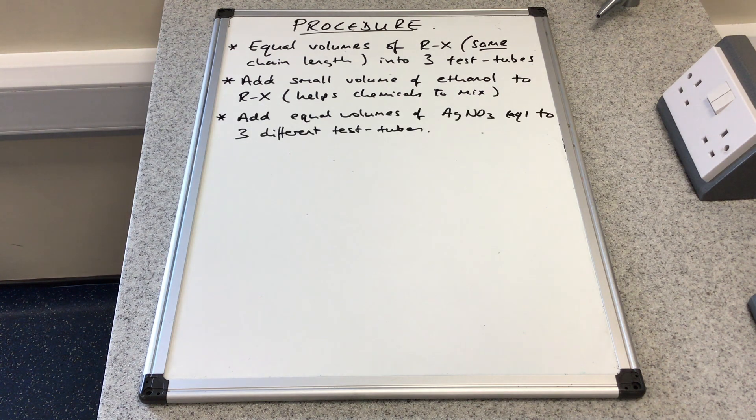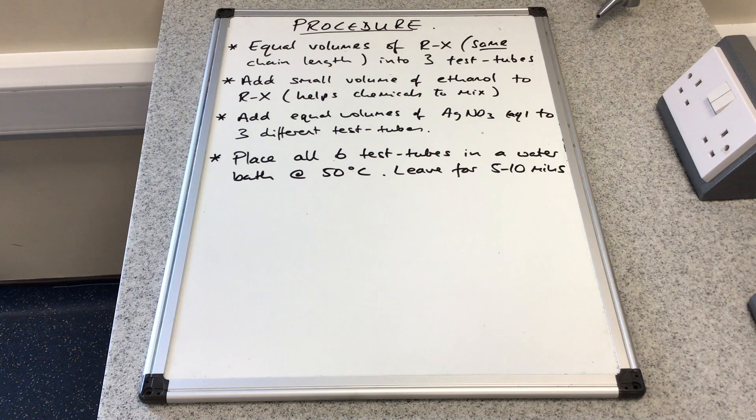You'd then get three more test tubes and add equal volumes of silver nitrate solution to those. Then place all six test tubes in a water bath at around 50 degrees C and leave them there for five to ten minutes to ensure everything's at the same temperature.